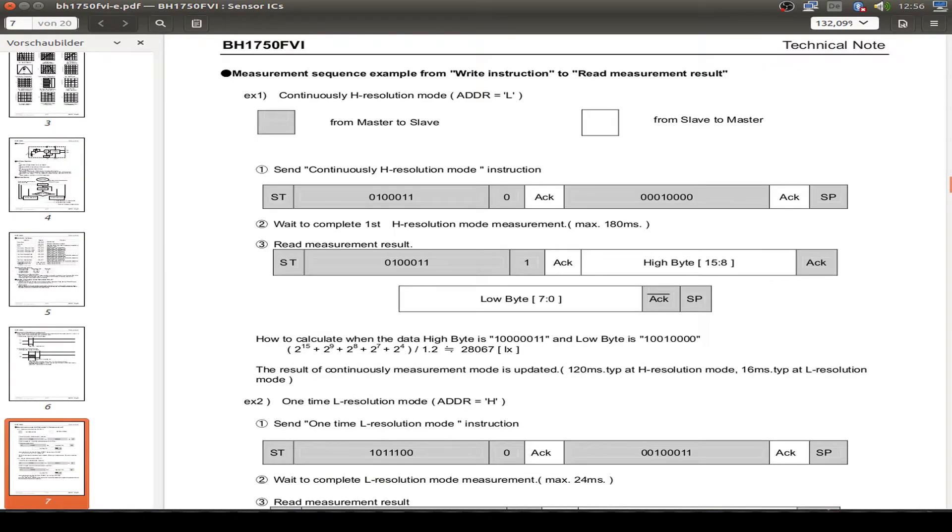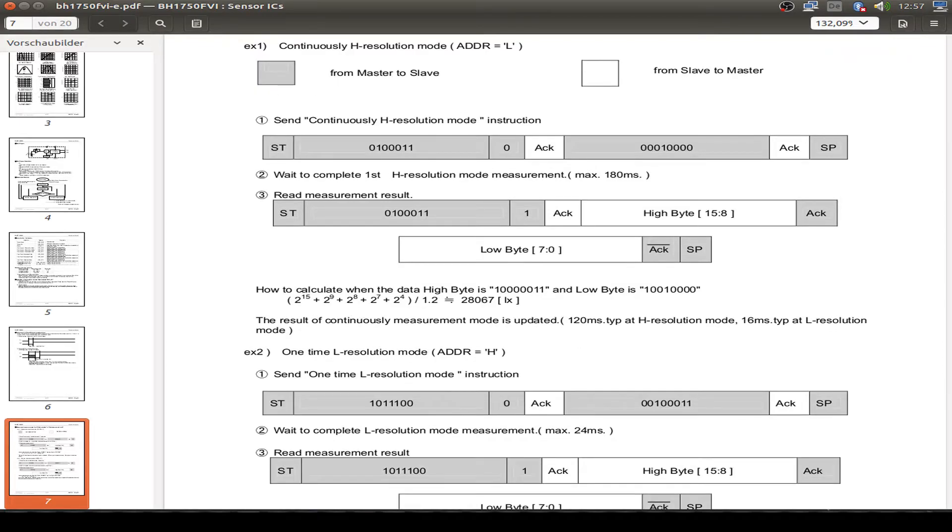Here's also explained how to send the I2C messages to the sensor and what we can get back from the measurements. We have to wait for the measurement, approximately 180 milliseconds for the higher resolution modes or 24 milliseconds for the low resolution mode.